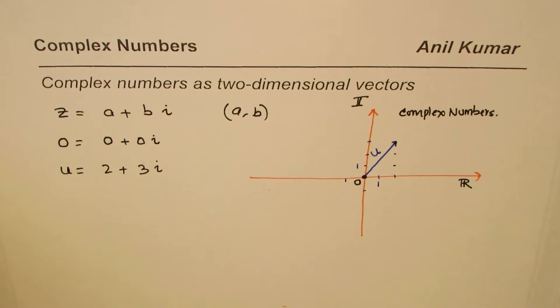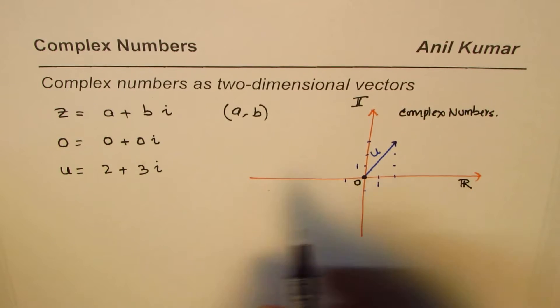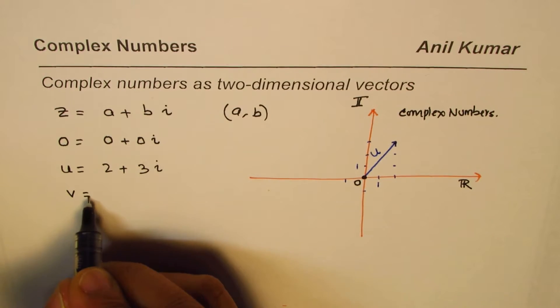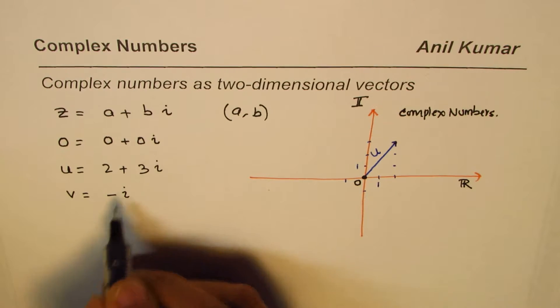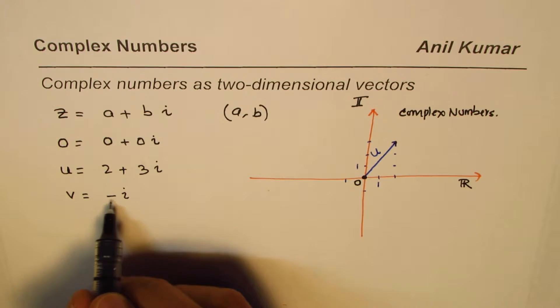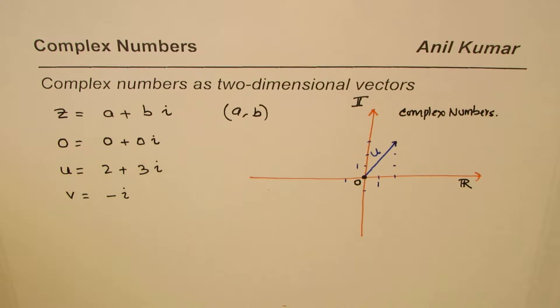Let me take up another vector which could be v, for example. And let's say vector v is minus i. Let's make it very simple. So in this case the real part is zero. Zero, real part is zero.